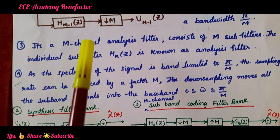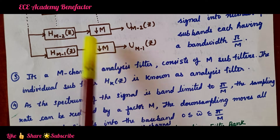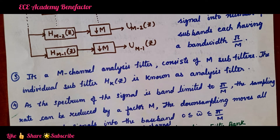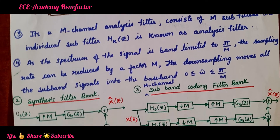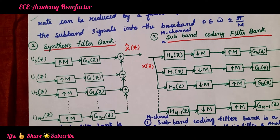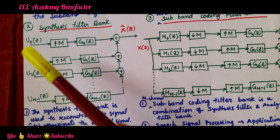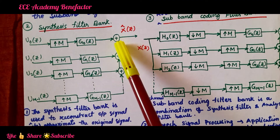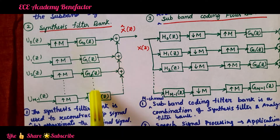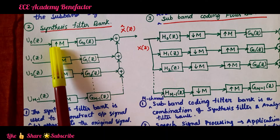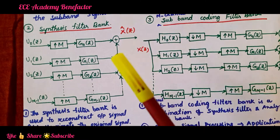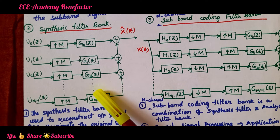After passing through the analysis filter, the signals are down sampled because each subband signal has a bandwidth of π/m. After down sampling, the subband signals are moved into a baseband ranging from 0 to π/m. In the Synthesis Filter Bank, different input signals are combined into one. Up sampling is done at the receiver side, while down sampling is done at the transmitter side.